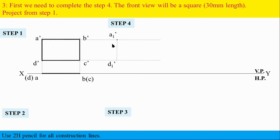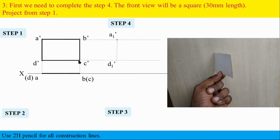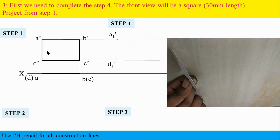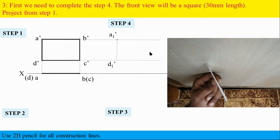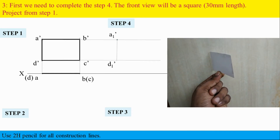In the square, what we can do is take a parallel side and increase that side length. The A dash D dash length parallel projection is 50, but actually 30. So what we can do is reduce the horizontal length of D dash C dash — if we reduce it to equal the square dimension, then the front view becomes a square.